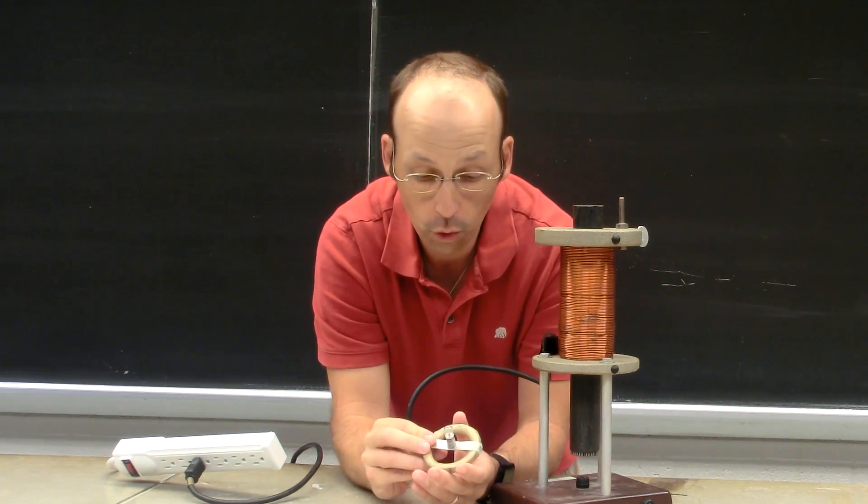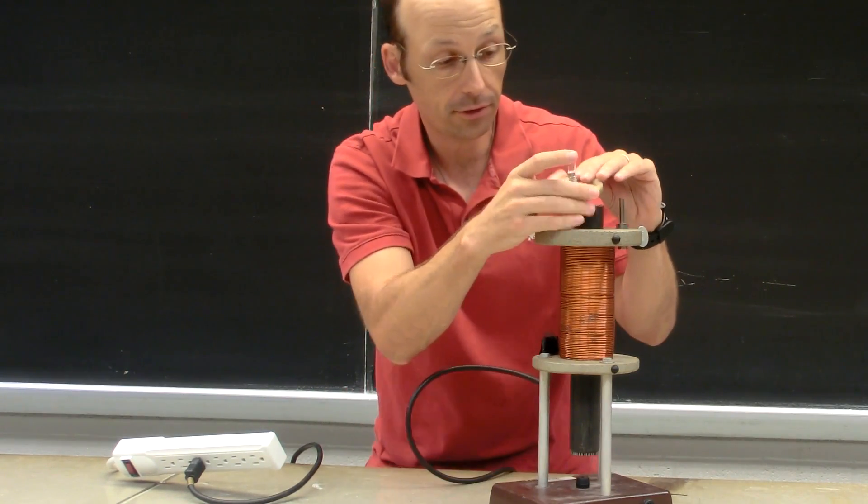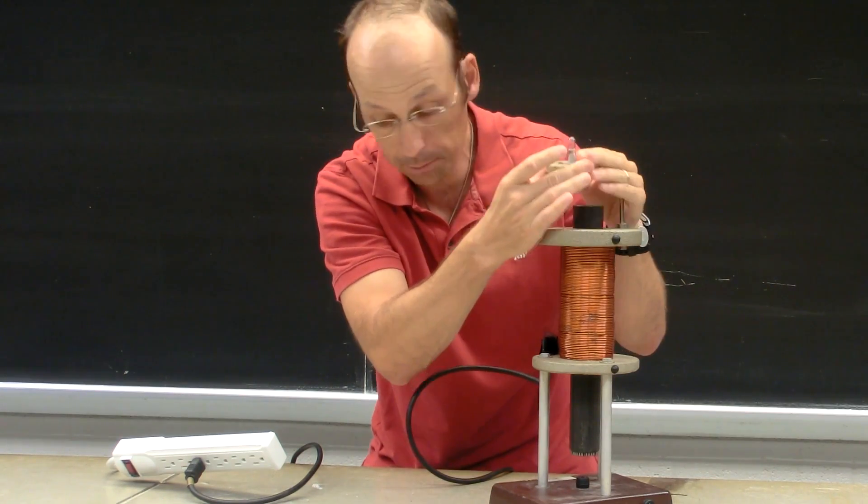Here I have a coil of wire with a light bulb on it, and you can see that the changing magnetic field here is going to make a changing magnetic field here. It induces the current to turn on the light bulb.